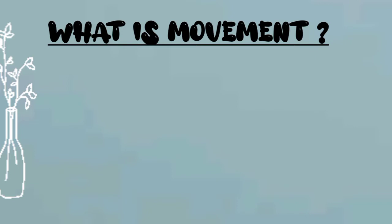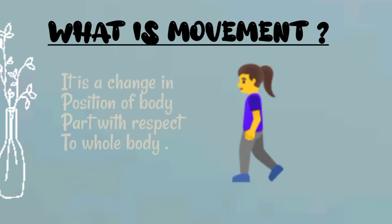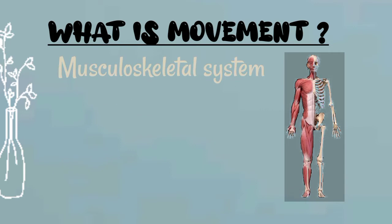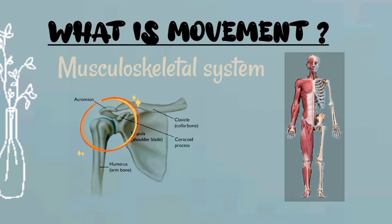The word movement in general means that it is a change in the position of a body part with respect to the whole body. These movements are possible due to the musculoskeletal system of the body. Movement takes place at the joint. So what is a joint itself?